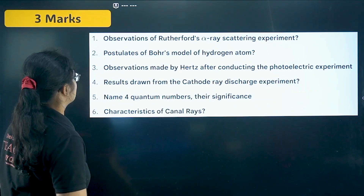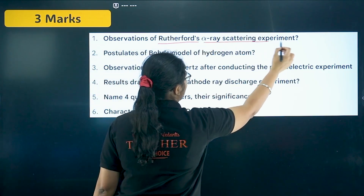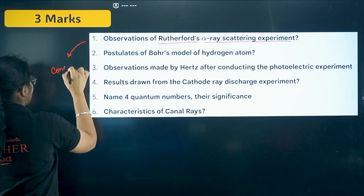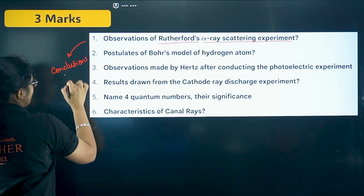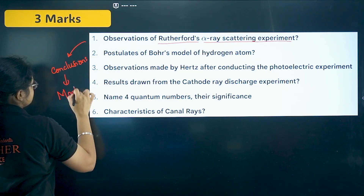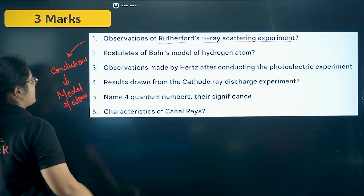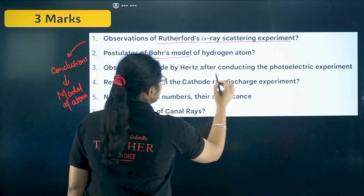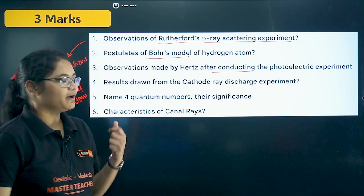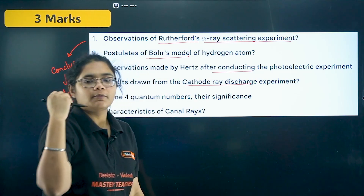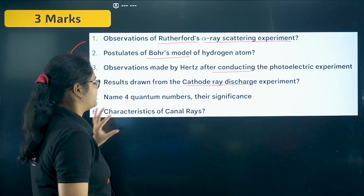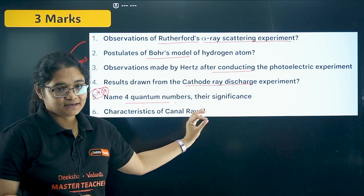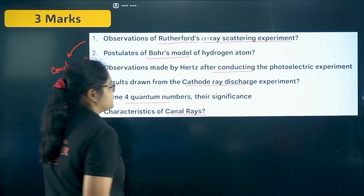Now for three marker questions: observations of Rutherford's alpha ray scattering experiment — and you can also get a question asking on the basis of those observations what conclusions were drawn, and from those conclusions what model of atom was suggested by Rutherford. Then the postulates of Bohr's model — very important. Then the photoelectric effect: what were the observations. Then the cathode ray discharge tube: what are the properties of cathode rays. This is a super important question — every year a question is asked from these topics. Also quantum numbers and their significance, and characteristics of canal rays.